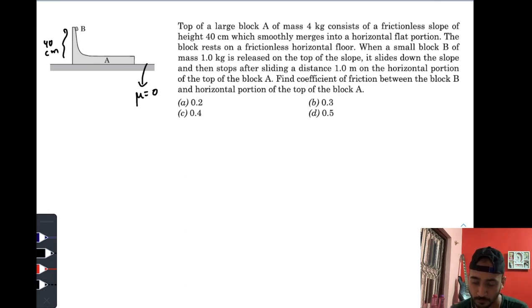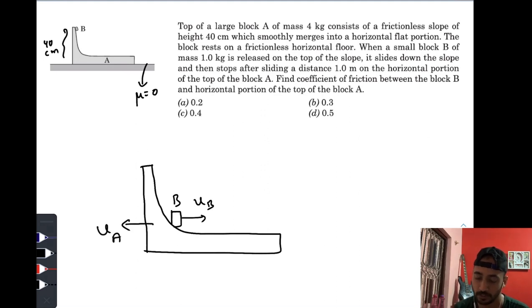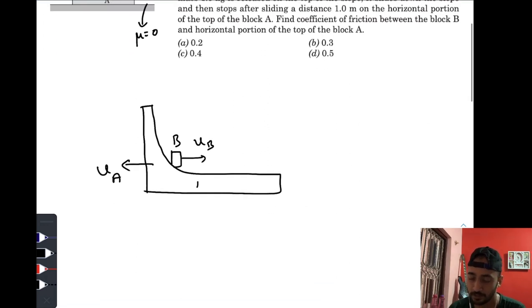So when this block is released, when it reaches the horizontal portion—when the block becomes totally horizontal—it gains some velocity, let it be vB. In fact, block A also gains some velocity, let it be vA. Now there will be conservation of momentum: mass of B times vB equals mass of A times vA, so vB equals 4vA. This is our first equation.